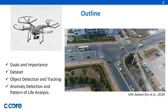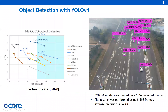Several algorithms were tested, investigated, and developed to automate object tracking and anomaly detection tasks. For object detection, we used YOLO version 4, which was previously demonstrated to have very good detection accuracy with real-time performance. Training was performed using 6,000 iterations on almost 23,000 frames. The trained model achieved average precision of 54.4% performance.